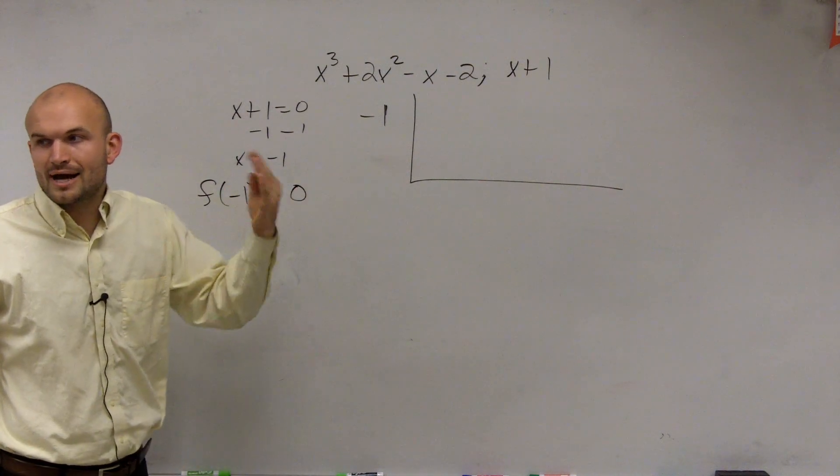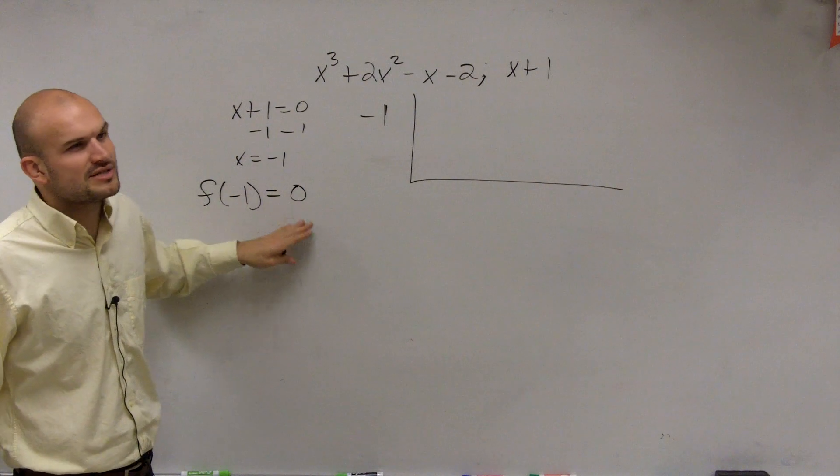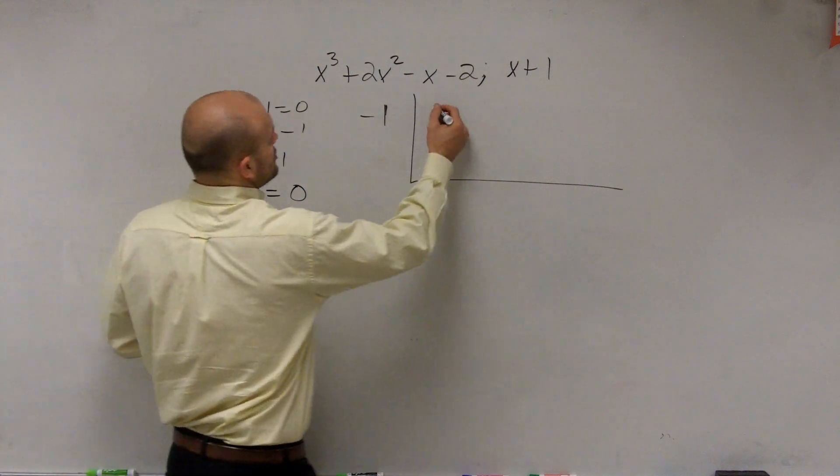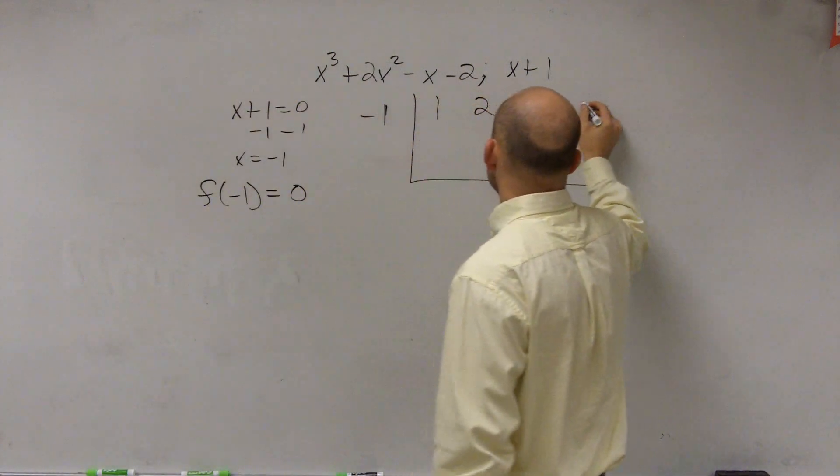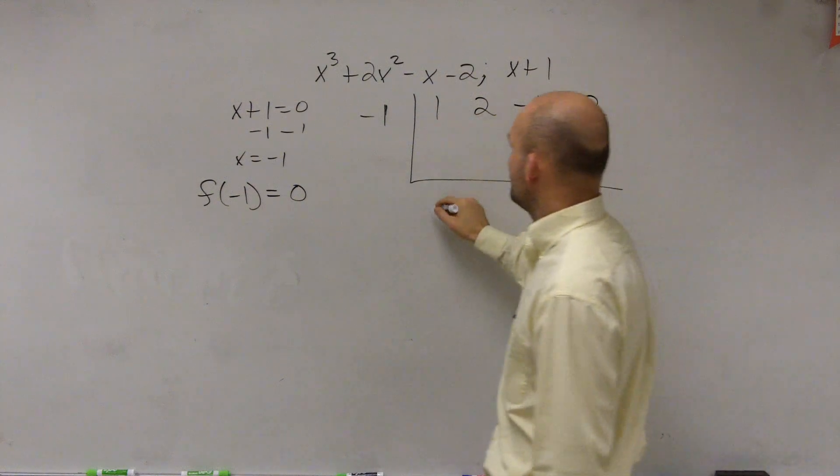However, I'll show you why there's going to be a difference, why we're not going to want to use this method to prove it's a factor. So we'll do 1, 2, negative 1, negative 2. Bring down the 1.